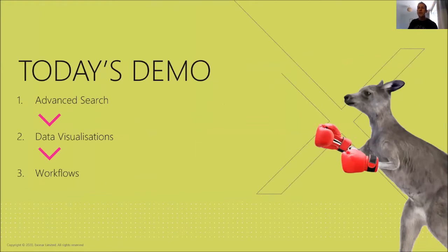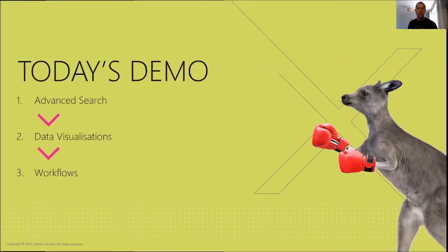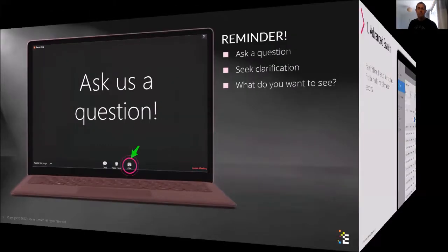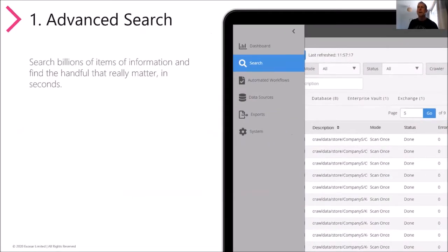Today's demo covers three areas: advanced search to find over-retained data, data visualization to understand that data, and workflows to help automate the tasks involved in over-retention. One more reminder — please ask questions as they come, and we'll deal with them as we can. All right, so advanced search: what this enables you to do is search billions of items of information. All of your data is in that index — the question is how do you search it and what tools are available.